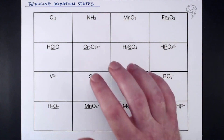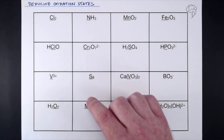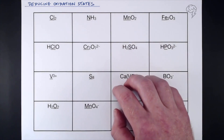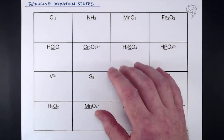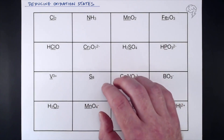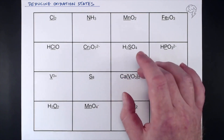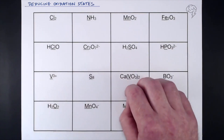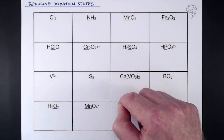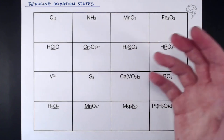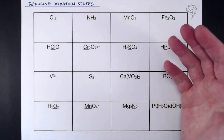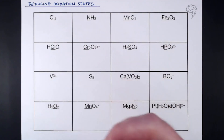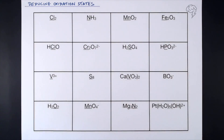Right now we're going to look at applying the rules we learned in the previous tutorial — deducing oxidation states of elements within compounds, ions, or whatever we're looking at. You need to be able to find the oxidation states of individual elements before we start looking at whole equations and changes in oxidation states. PDFs are below if you want to print this off, but if you're confident, have a go first and check your answers at the end.